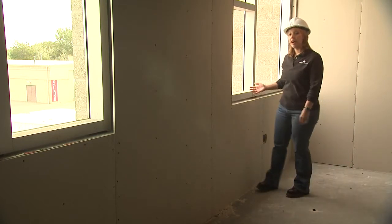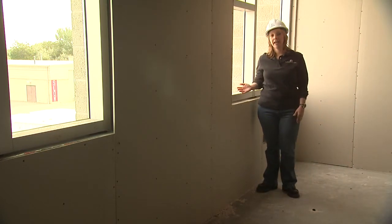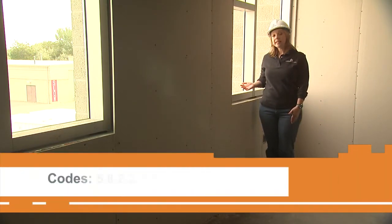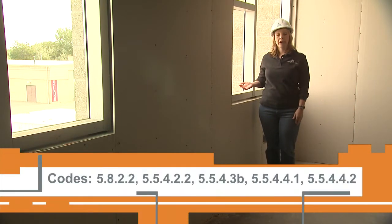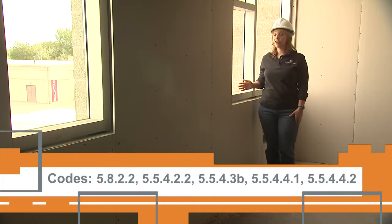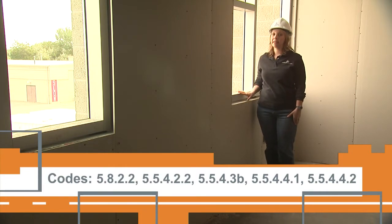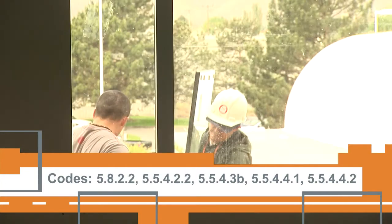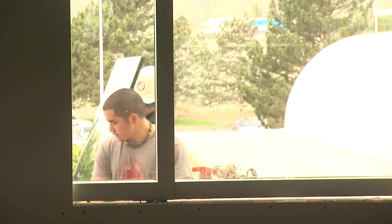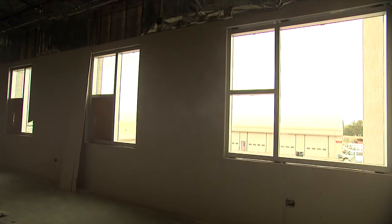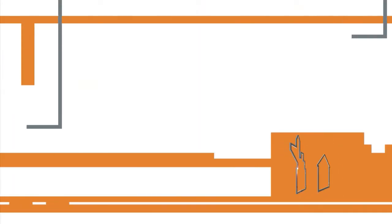Glazing plays a major role in energy code compliance. More glass typically means greater insulation levels are needed to meet those energy code requirements. How the windows are installed can also play a role in the durability of the building and health of the occupants. Three key elements need to be addressed.